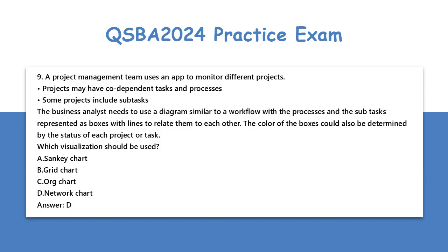Question 9: A project management team uses an app to monitor different projects. Projects may have codependent tasks and processes, and some projects include subtasks. The business analyst needs to use a diagram similar to a workflow, with processes and subtasks represented as boxes with lines to relate them to each other. The color of the boxes could also be determined by the status of each project or task. Which visualization should be used?